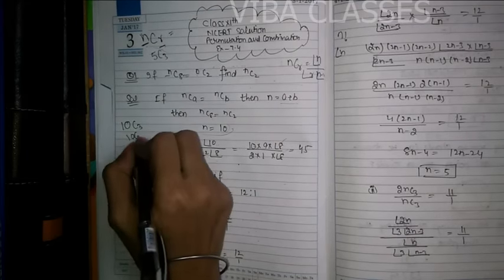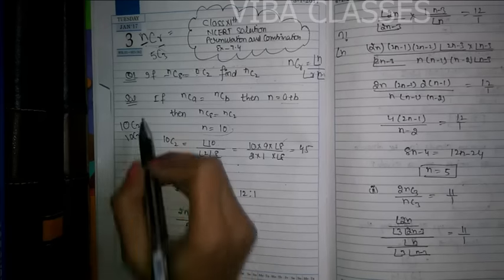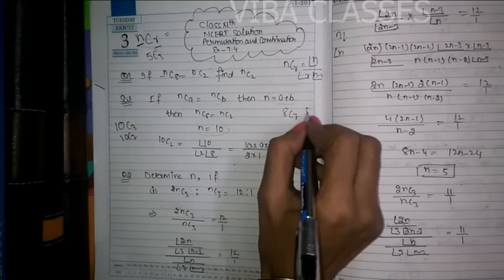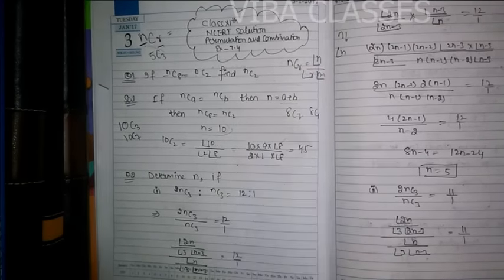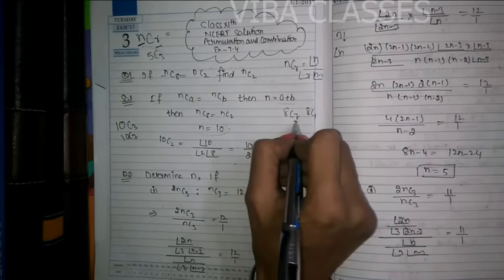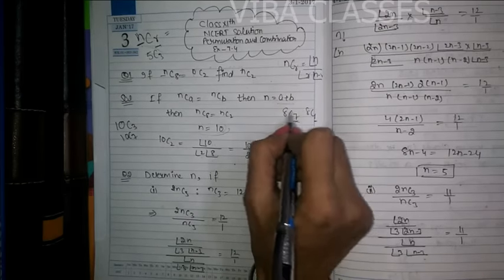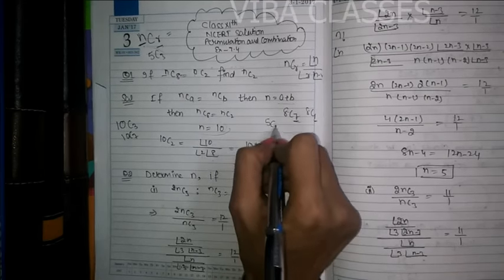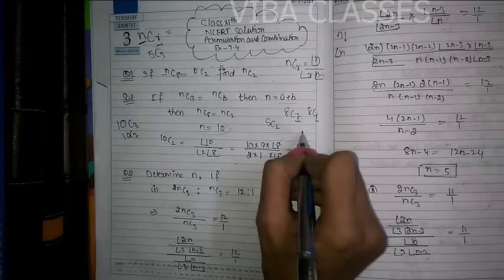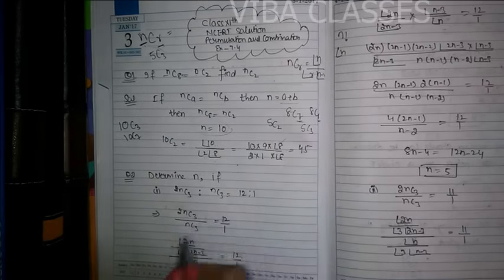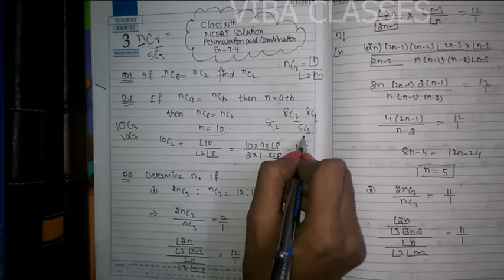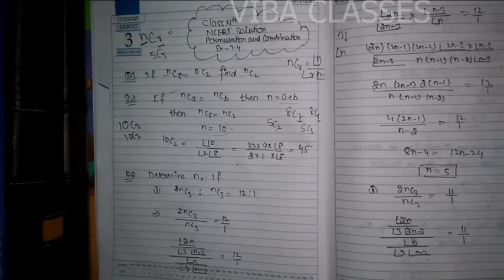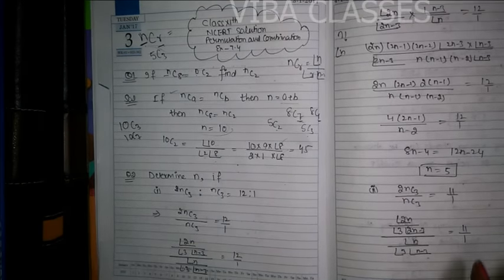This formula gives you a shortcut. If you have the combination formula clear, then check: 10C3 and 10C7 will always be the same because 3 plus 7 equals 10. Similarly, 8C7 and 8C1 will always be the same. So if the two values add up to n, they will always be equal. So if 5C2 is calculated, 5C3 will always be the same — 100%. This formula gives you a shortcut logic.